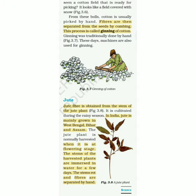Have you ever seen a cotton field that is ready for picking? It looks like a field covered with snow. From these balls, cotton is usually picked by hand. Fibers are then separated from the seeds by combing. This process is called ginning of cotton. Ginning was traditionally done by hand, but these days machines are also used for ginning. You can see this in the photograph.